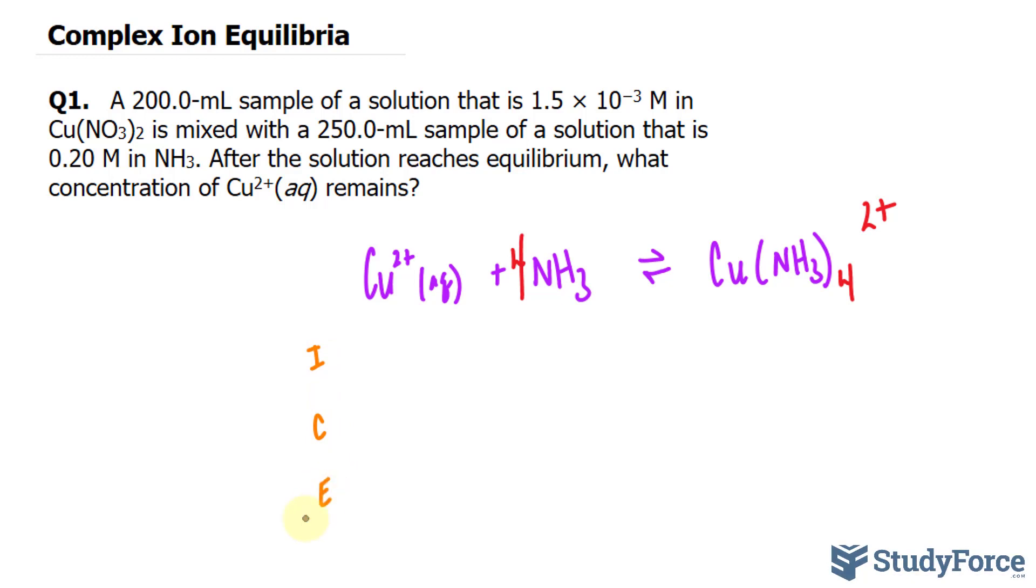Notice in the question that we are mixing two solutions together. Originally, when it was 250 milliliters of NH3, its concentration was 0.20. But if you're mixing two solutions together, the concentration will obviously change because it's becoming diluted. We have 250 milliliters of one solution coming together with 200 milliliters of the other, and now we have a new volume of 450 milliliters.